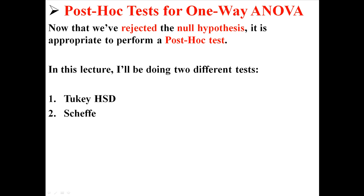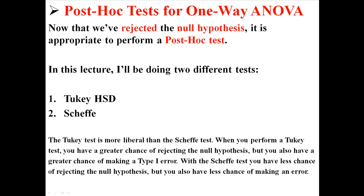Now there are a bunch of different post-hoc tests that we can do. I'm going to show you two of the most popular ones: Tukey test and Scheffe test. The Tukey test is more liberal than the Scheffe test. When you perform a Tukey test, you have a greater chance of rejecting the null hypothesis, but you also have a greater chance of making a type 1 error. With the Scheffe test, you have less chance of rejecting the null hypothesis, but you also have less chance of making an error.